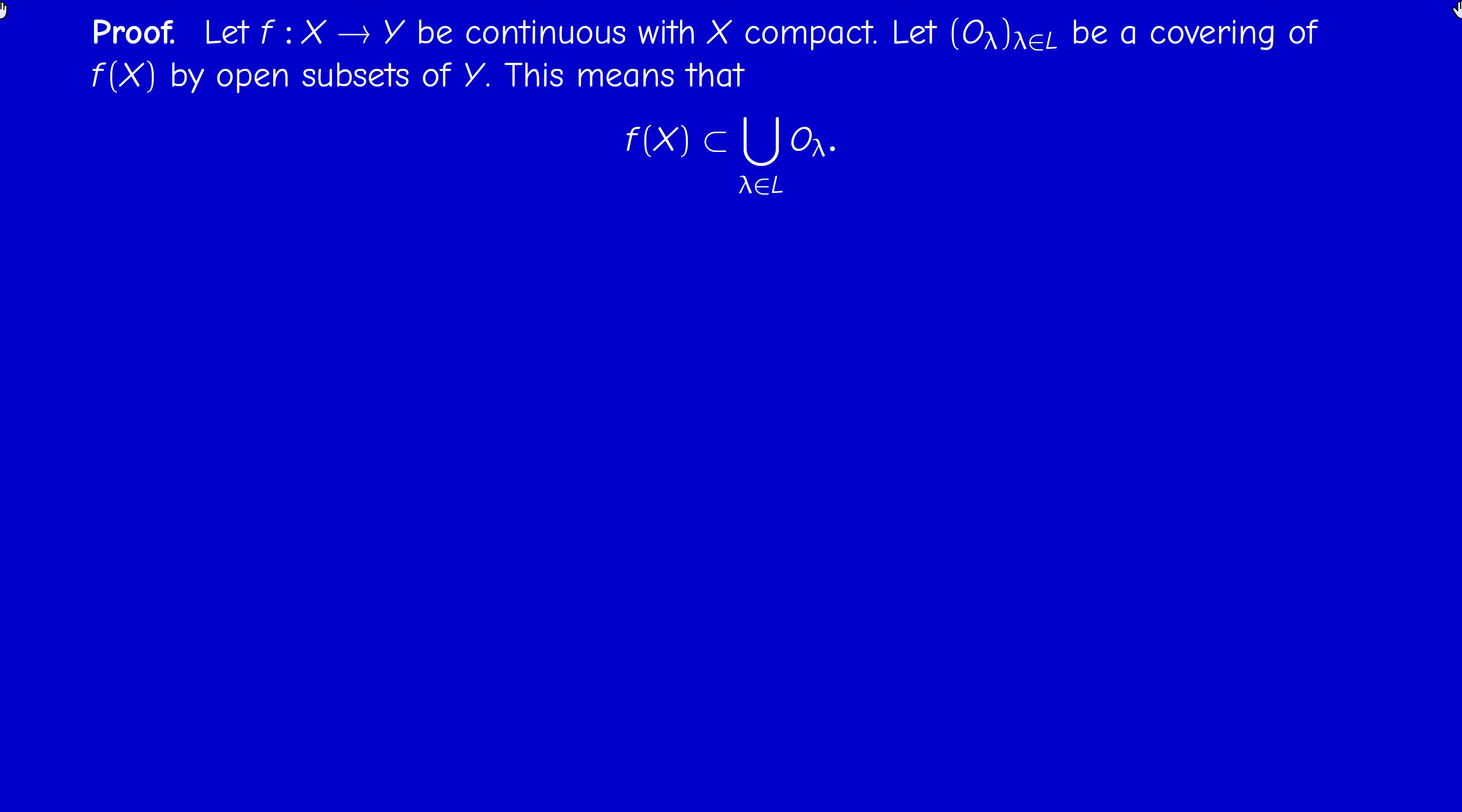We can use lemma 3.2. We consider an arbitrary covering of f(X) by open subsets of the bigger space Y. So f(X) is contained in the union. Therefore, when I take the inverse image, the inverse image of f(X) is just X, as you know from set theory.